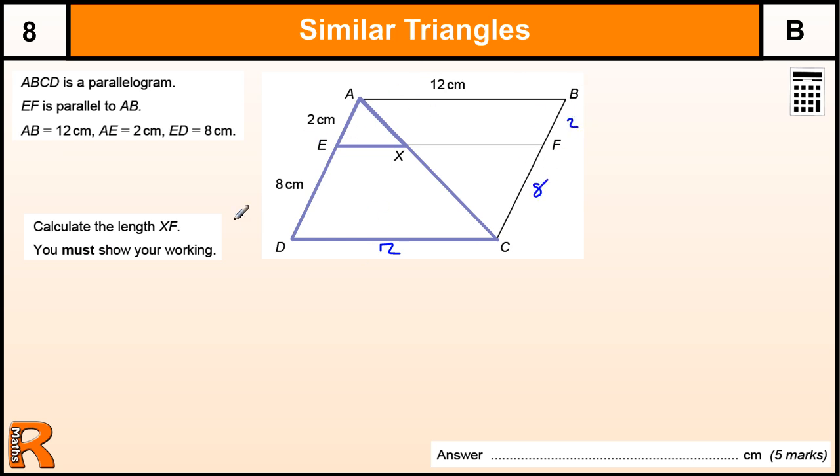This would be 2 and this would be 8 if we needed those. Now, we can clearly see this triangle here, this big triangle and this small triangle. Let's just separate those out.